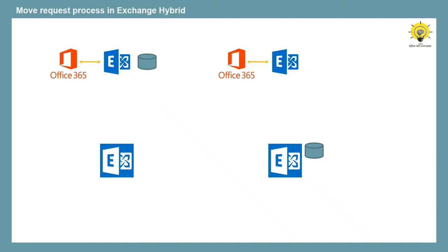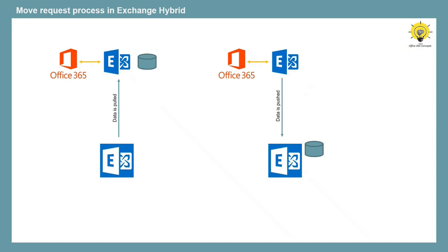Whether you do onboarding or off-boarding, both types of migrations are handled by Exchange Online. If you do onboarding, on-premise data is pulled from on-premise to Exchange Online. If you do off-boarding, data is pushed from Exchange Online to on-premise Exchange Server. So in both cases, Exchange Online is the one that handles the migration process. Hybrid migration is also called remote move.